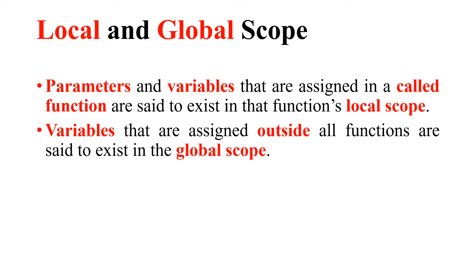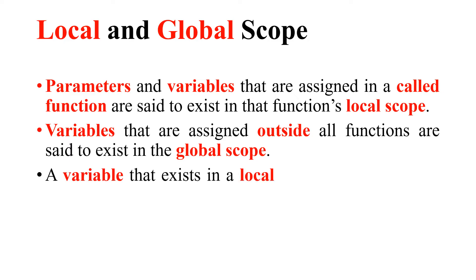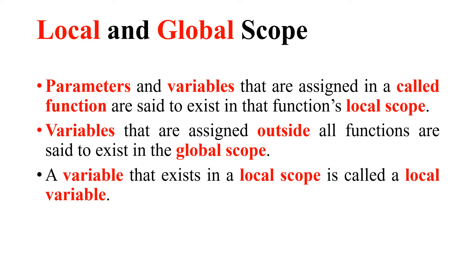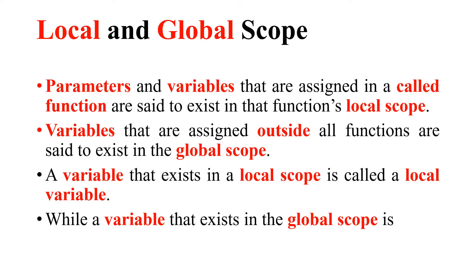A variable that exists in a local scope is called a local variable. Similarly, a variable that exists in the global scope is called a global variable — the global variable is associated with the global scope.